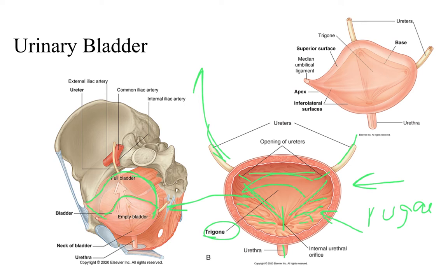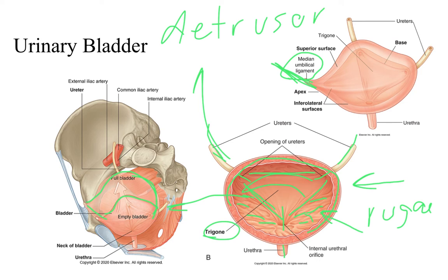The urinary bladder is held in place anteriorly by the median umbilical ligament, which is a remnant of a structure present during fetal development. The muscle surrounding the urinary bladder is known as the detrusor muscle. When the urinary bladder fills with urine and stretches that detrusor muscle, signals are sent that will eventually result in signals coming back to the detrusor muscle to begin its contraction, and that's what gives you the feeling of urgency to urinate.